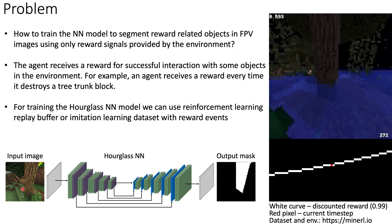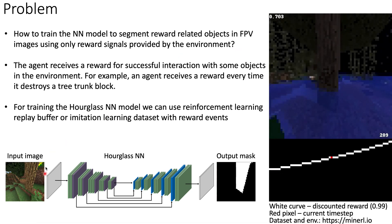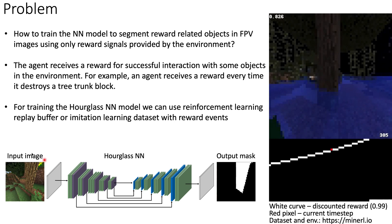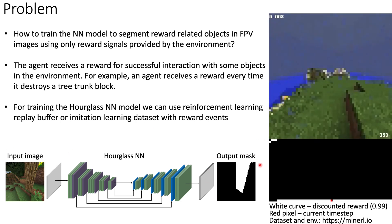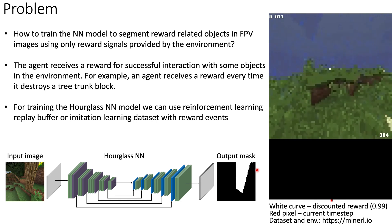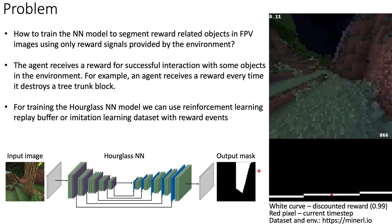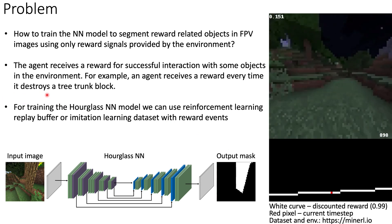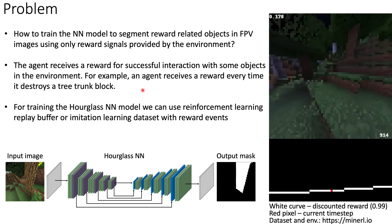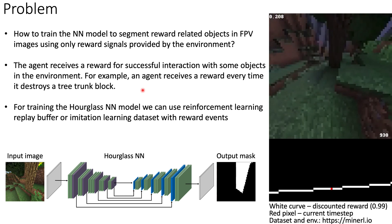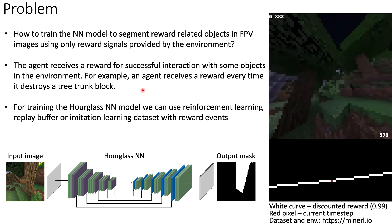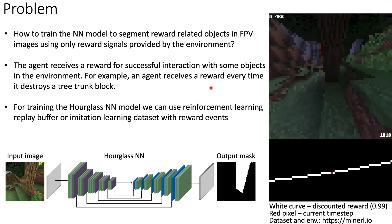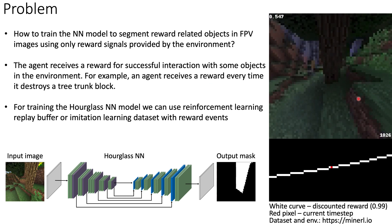That would be an easy task if we had input image and output mask pairs. Instead, the agent receives a reward for successful interaction with some object in the environment. For example, an agent receives a reward every time it destroys a tree trunk block.